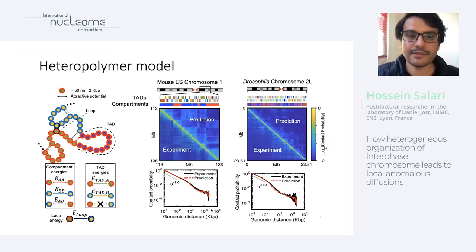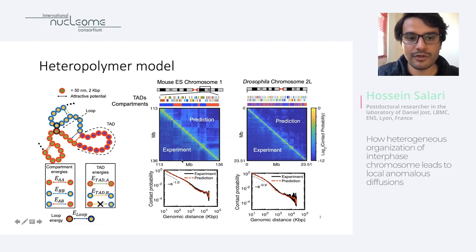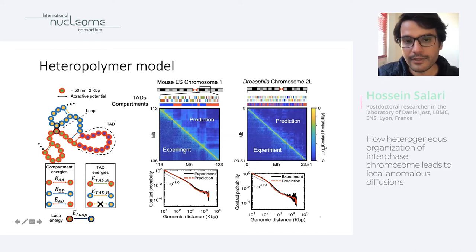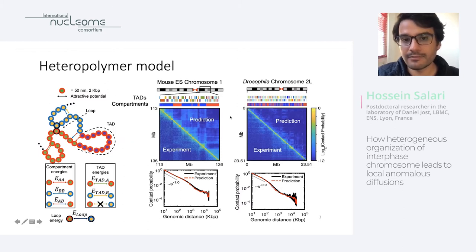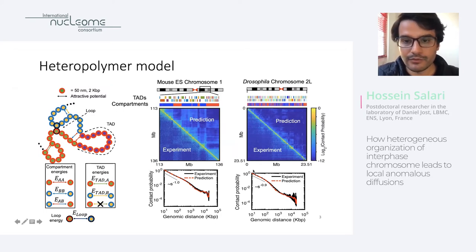To understand this, we started with a polymer model — a coarse-grained polymer model — decorated by different structural properties, like TADs, compartments, and CTCF-mediated loops. With these parameters, we are able to reproduce Hi-C maps for two different examples: mouse embryonic stem cell chromosome 1, a portion of 23 megabases, and also a Drosophila embryo cell chromosome arm 2L. You can see the accuracy of the model.